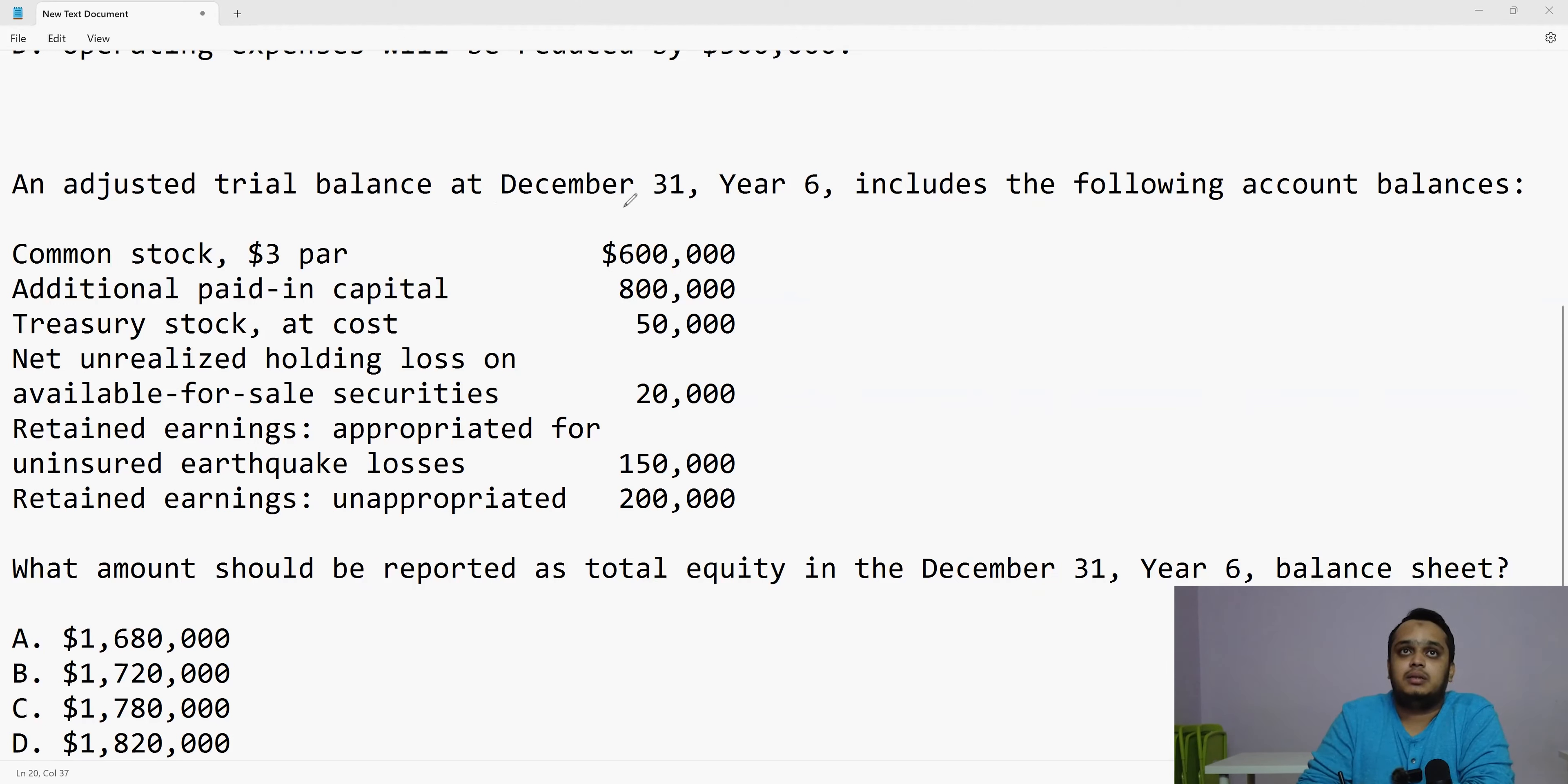Now, an adjusted trial balance at December 31st year 6 includes the following account balances. Common stock 600,000. Additional paid-in capital 800,000. Treasury stock 50,000. Net unrealized holding loss on available for sale securities 20,000. Retained earnings appropriated for uninsured earthquake losses 150,000. Retained earnings unappropriated 200,000. What amount should be reported as total equity in December 31st year 6? Now, in this scenario, if you have conceptual clarity, answer is like this. And I am going to answer it also like that.